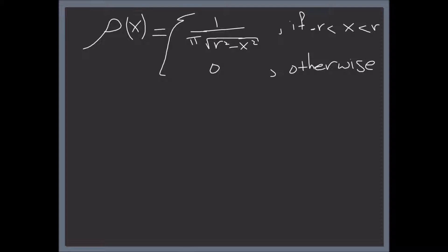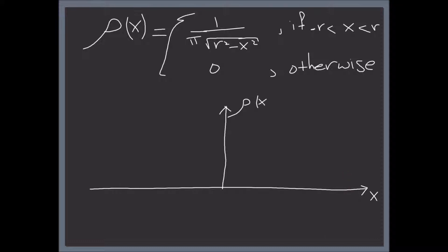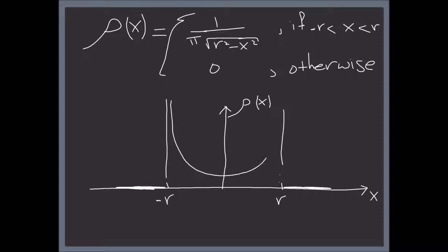If you want to visualize it: if this is the x-axis and this is the probability density, we're going to plot that between r and negative r. Outside this range the probability density is 0, and anywhere inside it's 1 over a square root, so it's going to look something like a U-shape.